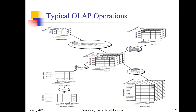Next, dice operation. Dice is performed for location equal to Toronto or Vancouver, and time equal to Q1 or Q2, and item equal to home or computer. For dice we get all three dimensions as shown in the figure: two cities, two items, and two quarters. That is the dice operation result.